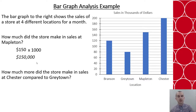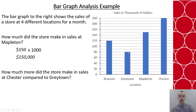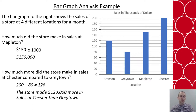For a between question: how much more did the store make at Chester compared to Graytown? Chester sold 200 and Graytown sold 80, in thousands of dollars. 200 minus 80 is 120, which means the store made $120,000 more in sales at Chester than in Graytown.